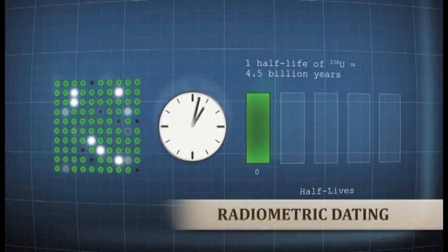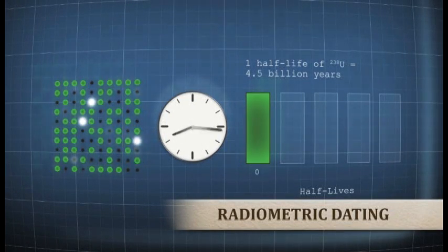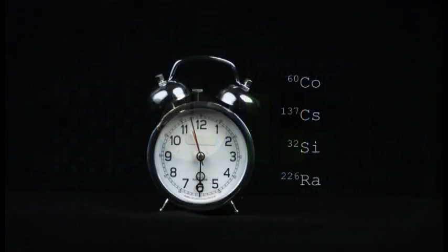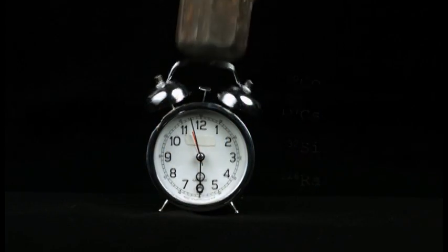Cobalt-60, cesium-137, silicon-32 and radium-226 do indeed vary with time, which of course would invalidate the calculated ages.